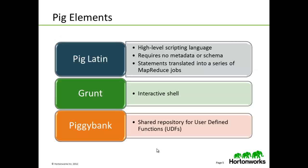PIG consists of three elements. One, a language called PIG Latin — it is a high-level scripting language that requires no metadata or schema, and statements are translated into a series of MapReduce jobs. Two, an interactive shell known as Grunt. And three, a shared repository created and maintained by the community for user-defined functions called PIG Bank. PIG can also be extended with JAR files created by the developer.